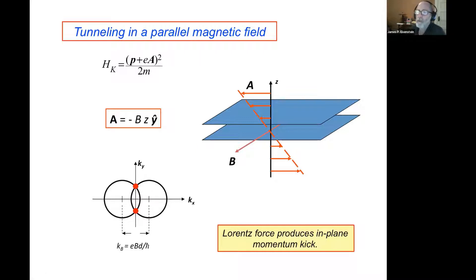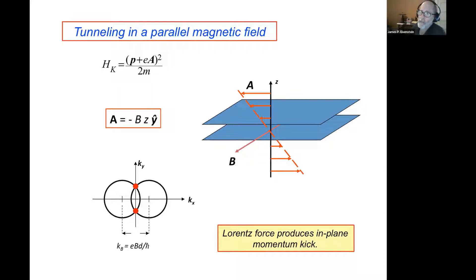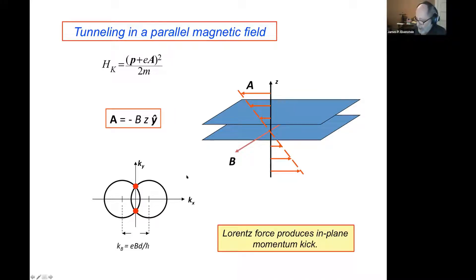Without the parallel field, with equal densities, the two Fermi surfaces are circles lying directly on top of one another in momentum space. With the parallel field applied, one shifts relative to the other. If you're going to conserve canonical momentum on tunneling, you can only do so at the two points where these Fermi surfaces intersect — unlike before when tunneling could occur all around the Fermi surface.